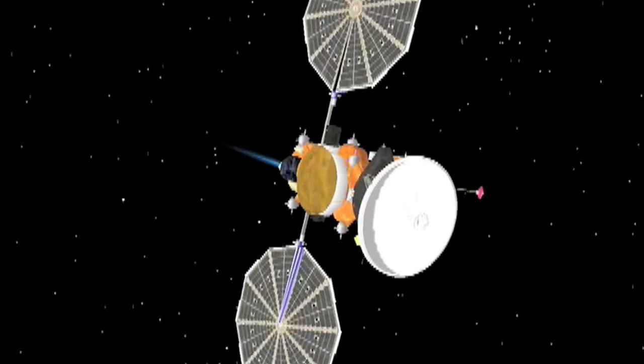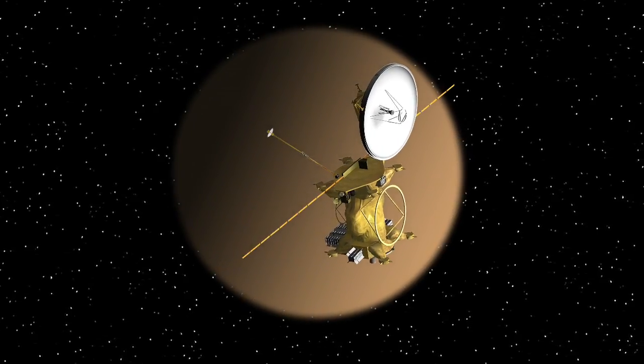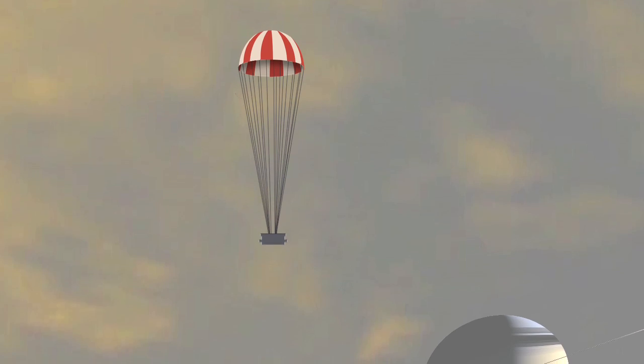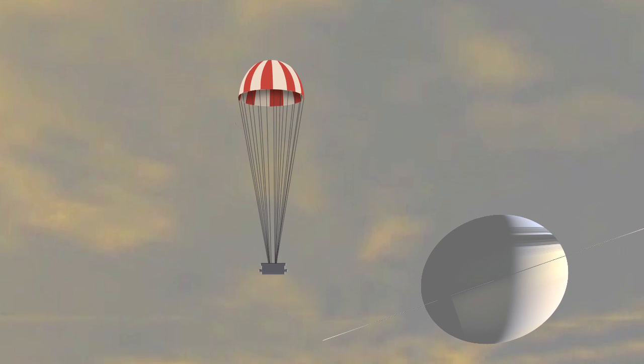The Titan Saturn System mission is a three-in-one mission with an orbiter for Titan, a balloon that will float through Titan's atmosphere, and a lander that will splash down on one of the northern lakes of Titan.